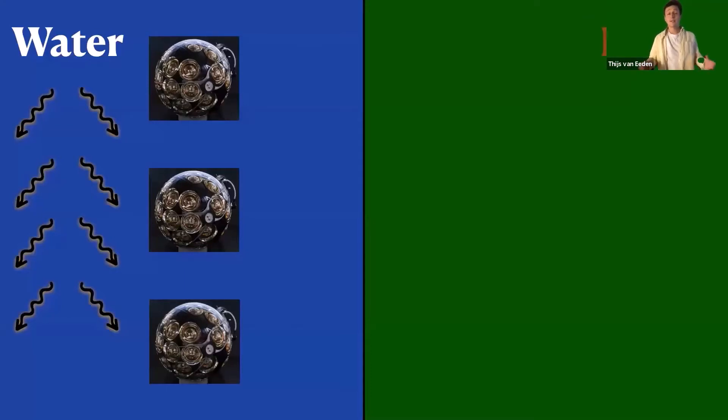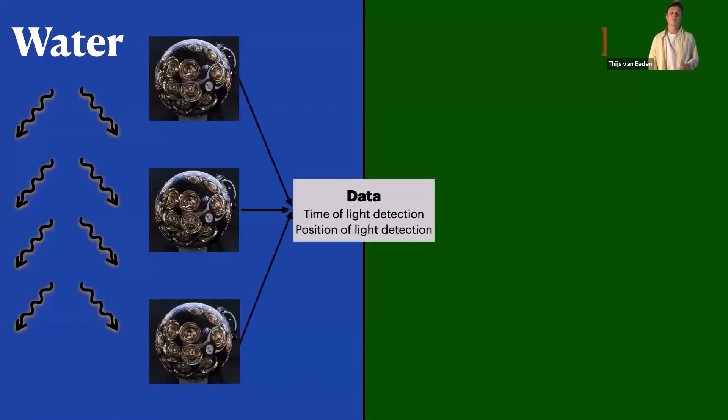Our sensors detect light at the bottom of the sea and they send the data to shore. The data consists of two things, the time at which light was detected and the position of the sensor that actually saw the light.